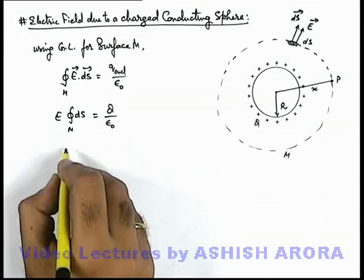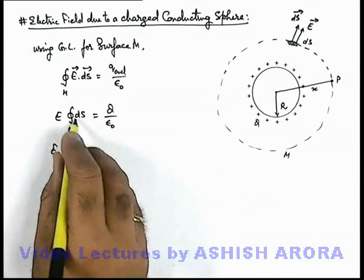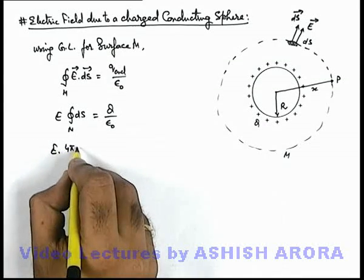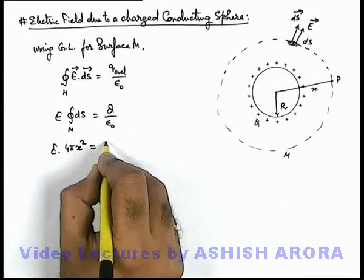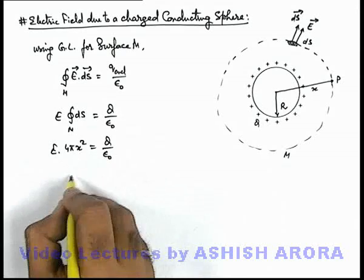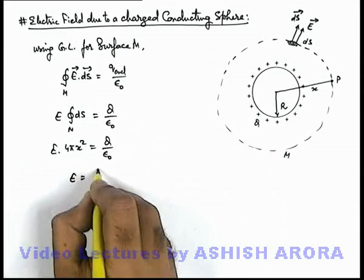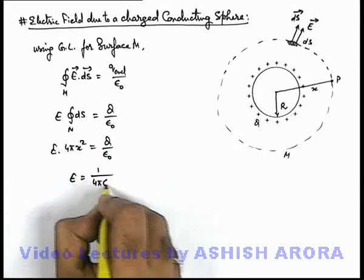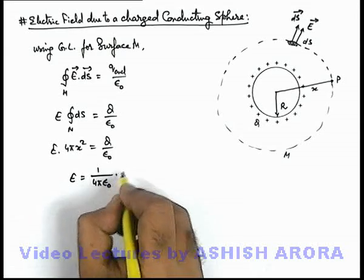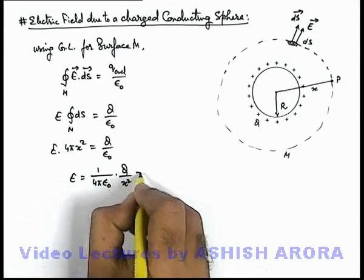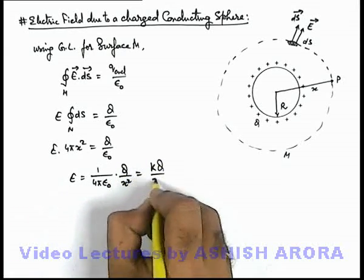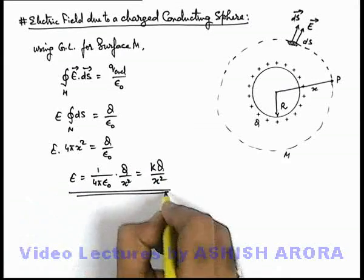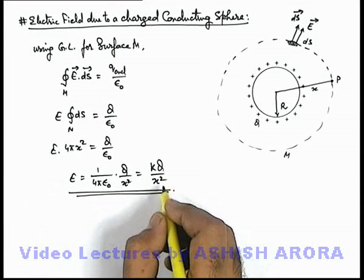So in this situation we can write E multiplied by integration of ds we can write as 4 pi x square, this will be Q by epsilon not. So this electric field we can write as 1 by 4 pi epsilon not into Q by x square, which can be written as kQ by x square which we already studied earlier in the beginning of electrostatics.